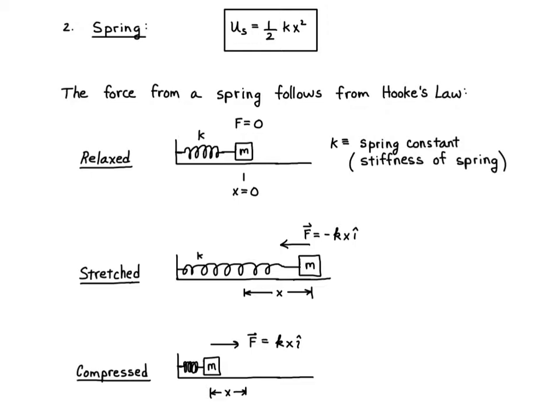That is all you need to know about Hooke's Law. From this law, we can integrate it to get the work done by this spring force, which equals the negative of the potential energy. This is how we get the equation for the potential energy of a spring. For a spring, the potential energy is equal to one-half K x squared, where x is the amount of stretch or compression.